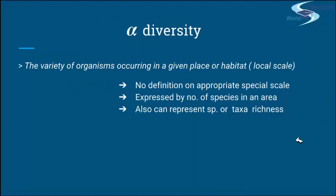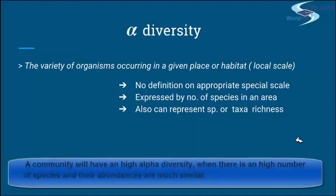We can define alpha diversity as the variety of organisms occurring in a given place or habitat, or simply the number of different species in a small local area — species richness altogether. Let's say a city would be an alpha diversity representation: species richness within one city. A community will have a high alpha diversity when there is a high number of species and their abundances are much similar.